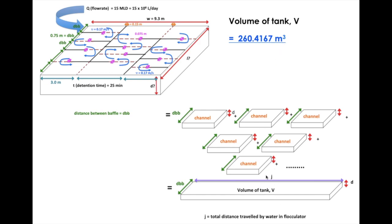So now we would like to find out our j which is the total distance traveled by water in flocculator. If we look at this diagram, the total distance traveled by water in flocculation tank would be the product of the speed with the detention time. Or in other words, to find out the distance for water to travel in the flocculation tank is equal to speed times detention time. So that is basically j.